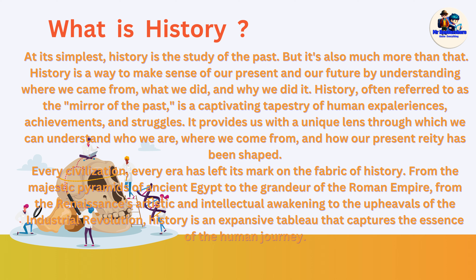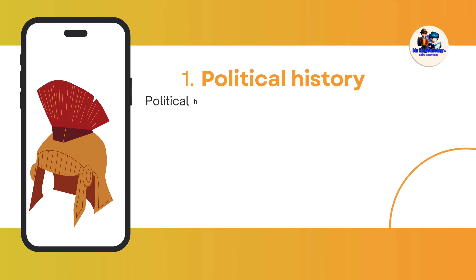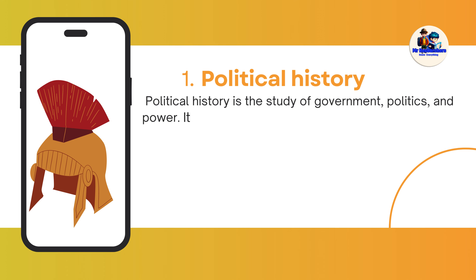Let's talk about the different types of history. There are many ways to classify history, but one of the most common is to divide it into three main types: political, economic, and social. Political history is the study of government, politics, and power. It includes the rise and fall of empires, the formation of nation-states, the evolution of constitutions, and the role of leaders and institutions in shaping society.